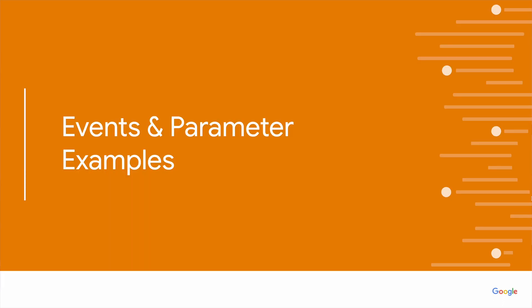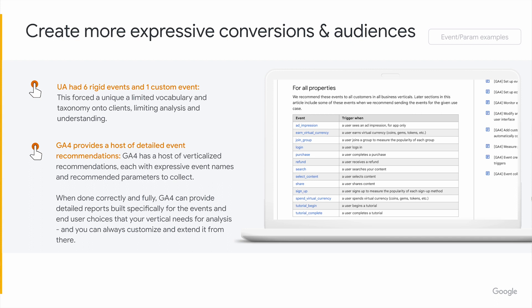Specifically regarding events and parameters, UA had six rigid sets of events and then one catch-all custom event. You could send a well-known but rigid set of parameters along with those events. Users overloaded things like category, action, and labels so that all their custom things were in one place, making it difficult to navigate. GA4 allows you to name these custom events however you want and actually find the report specific to that event. You no longer have to go to one catch-all place for all your custom actions — you can name the action appropriately and check out the parameters and attributes associated with them.